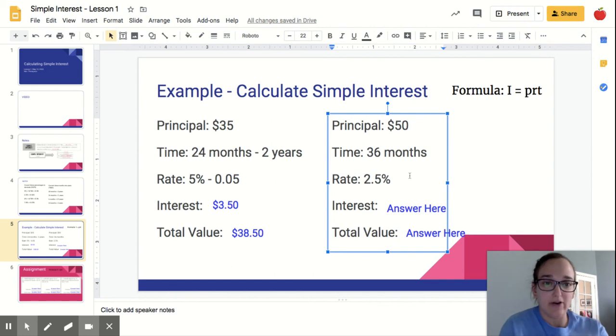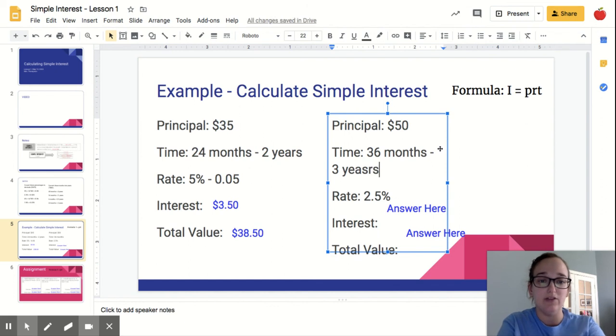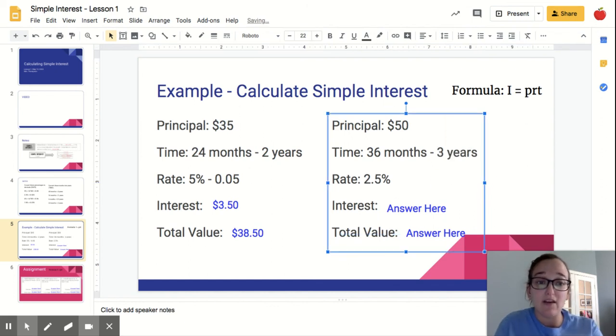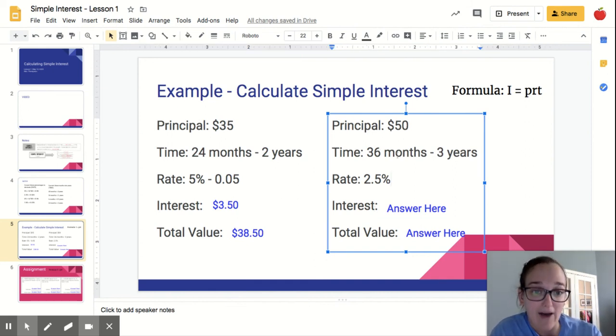So here's another example. My principal is 50. My time is 36 months, but I need that to be in years in order to multiply it. That's the biggest trick that they do all the time, is that they'll give you months. And so you'll look at that and go, oh, I just need to multiply 50 times 36 times 2.5. No. You have to turn your time into years and turn your rate into a decimal.